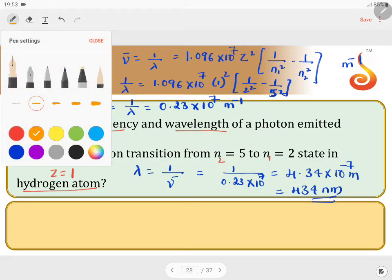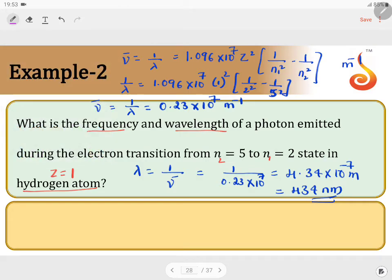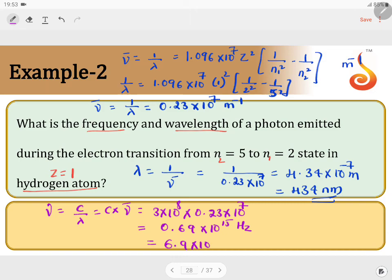Then what's the second answer? That is the frequency. Once you know the wavelength, it's easy. Frequency equals c by lambda or c into wave number. C is 3 times 10 power 8 velocity of light in vacuum. Nu bar is 0.23 times 10 power 7. 0.23 into 3 will be 0.69 times 10 power 15 hertz. Using scientific notation, you get 6.9 times 10 power 14 hertz. This is the answer.